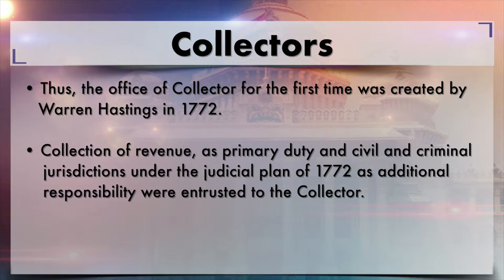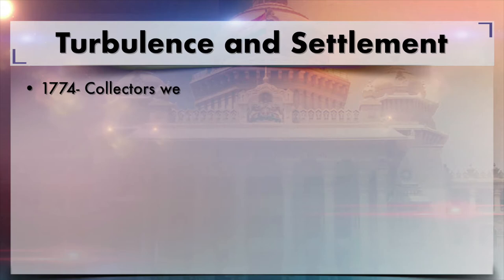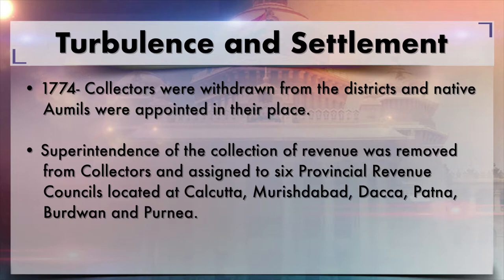The collector was assigned responsibility for collection and management of revenue, and also for dealing with civil and criminal jurisdictions under the Judicial Plan of 1772. In 1774, collectors were withdrawn from the districts and native officials were appointed in their place. The superintendence of revenue collection was removed from collectors and assigned to provincial revenue councils located at Calcutta, Murshidabad, Dhaka, Patna, Burdwan, and Purnia in Bengal.